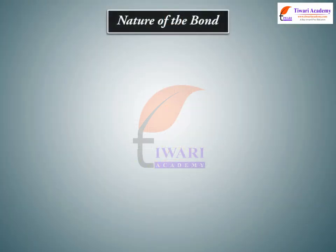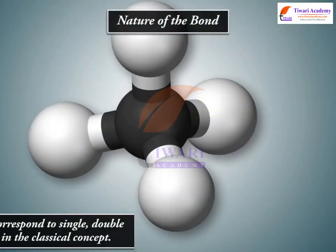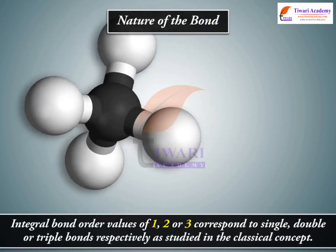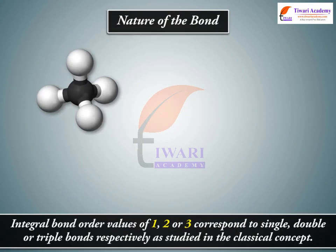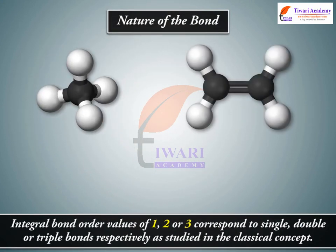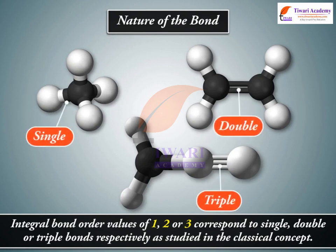Nature of the Bond. Integral bond order values of 1, 2, or 3 correspond to single, double, or triple bonds respectively, as studied in the classical concept.